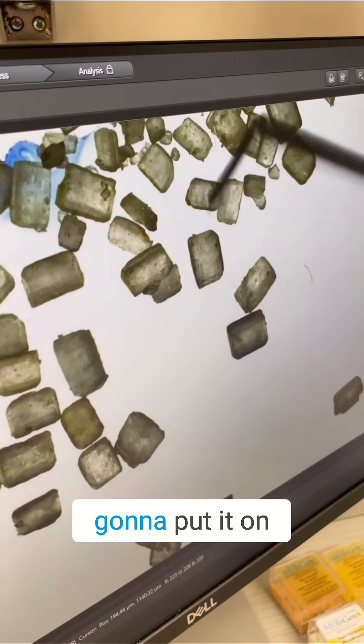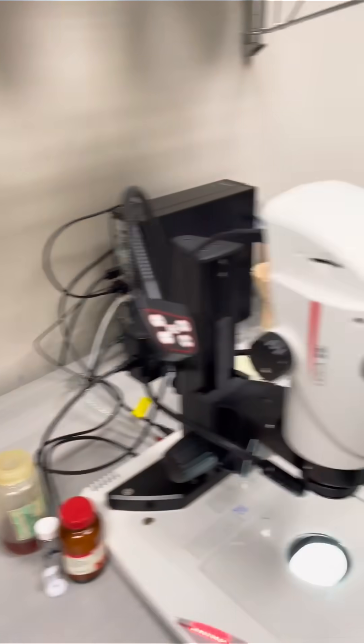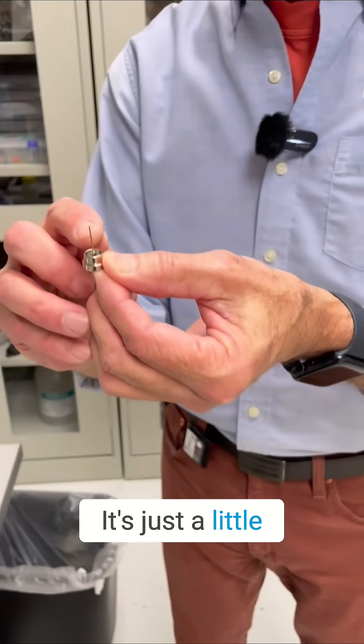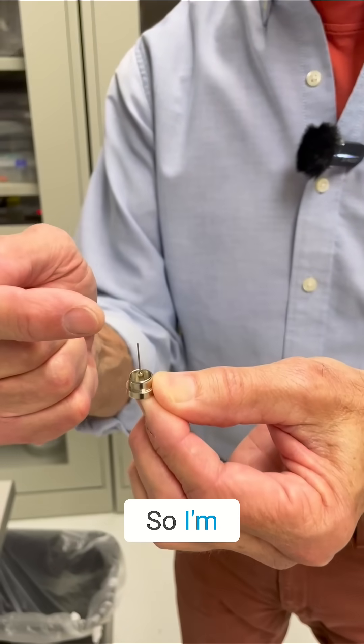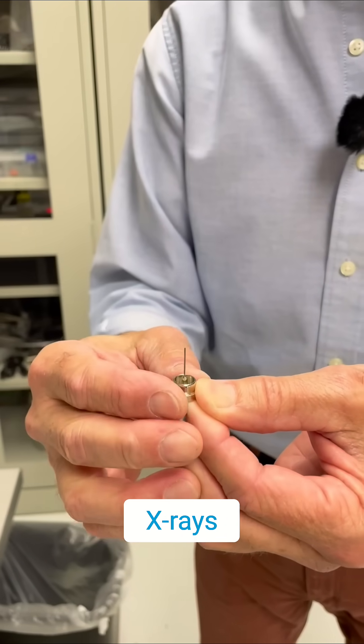Well, I'm going to pick one out and put it on a little crystal holder. Okay. And I'll show you what that looks like. It's just a little tiny mount with a little nylon loop in there. So I've stuck a crystal on there and we're going to go shoot x-rays at it.